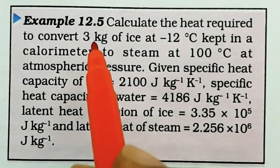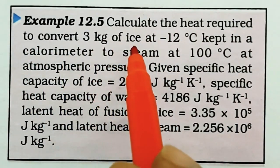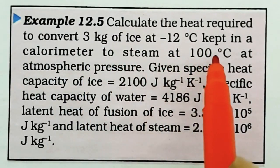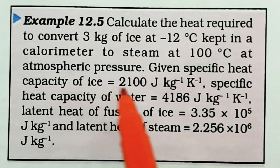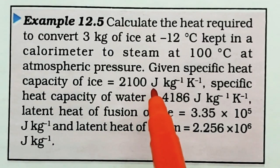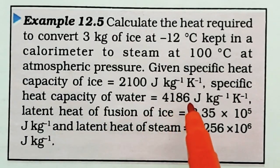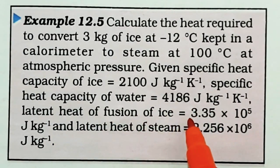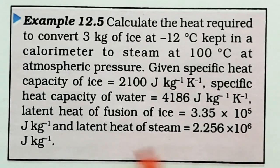See example problem 12.5. Calculate the heat required to convert 3 kg of ice at minus 12 degree Celsius to steam at 100 degree Celsius. Given: specific heat capacity of ice is 2100 joules per kg per Kelvin, specific heat capacity of water is 4186 joules per kg per Kelvin, latent heat of fusion of ice is 3.35 times 10 to the power 5 joules per kg, and latent heat of steam is 2.256 times 10 to the power 6 joules per kg.